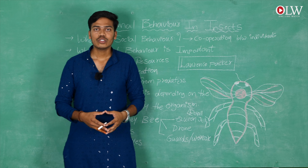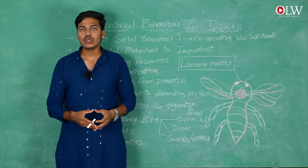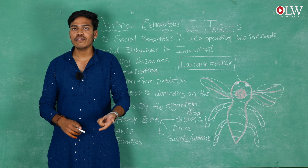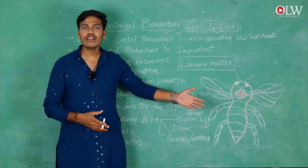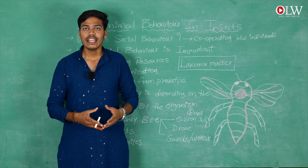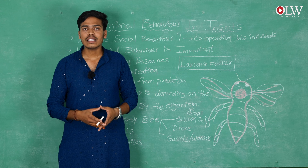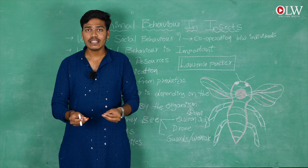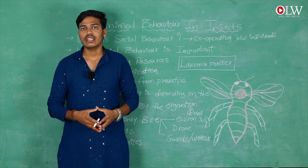First, we will discuss social behavior in honeybees. According to their work and function, honeybees are differentiated into three main groups: queen bee, drone bees, and worker bees. The queen bee is the master of the colony, controlling all other honeybees in the entire colony. It is the only honeybee which is large in size. It secretes or produces royal jelly — the material secreted by the honeybee — and the bee which consumes royal jelly becomes the queen of the colony.